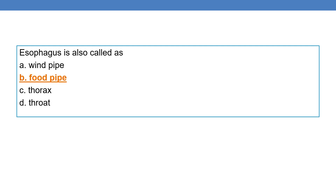Next question: the esophagus is also called the foodpipe. We know that the trachea is called the windpipe, the larynx is called the throat, and the chest is called the thorax. Whereas the esophagus is called the foodpipe.